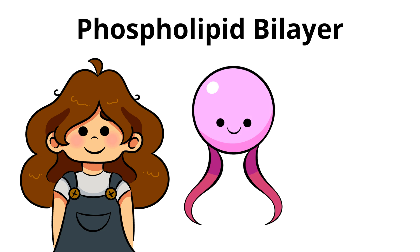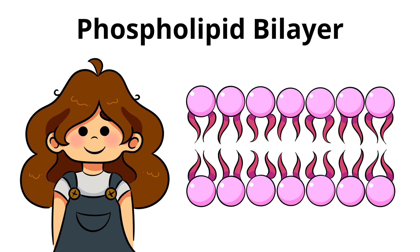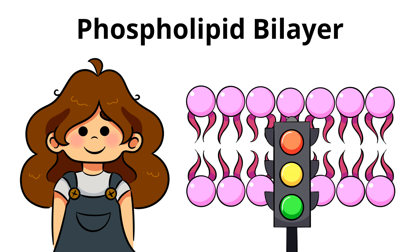These molecules have both a head and a tail. The heads are hydrophilic, meaning they love water. Meanwhile, the tails are hydrophobic, meaning they hate water. This arrangement of the molecules keeps the cell's internal environment stable by controlling what enters and exits the cell.